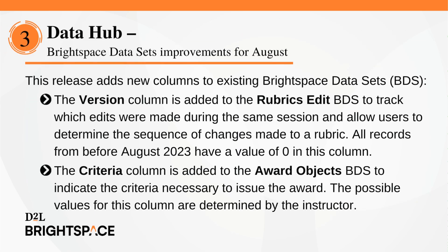This release adds new columns to existing Brightspace datasets (BDS). The Version column is added to the RubricsEdit BDS to track which edits were made during the same session and allow users to determine the sequence of changes made to a rubric. This column only has data for edits made to assessed rubrics from August 2023 onward. All records from before August 2023 have a value of zero in this column.